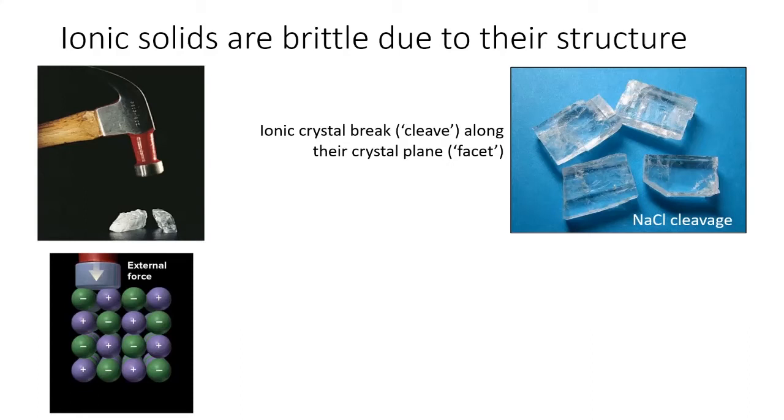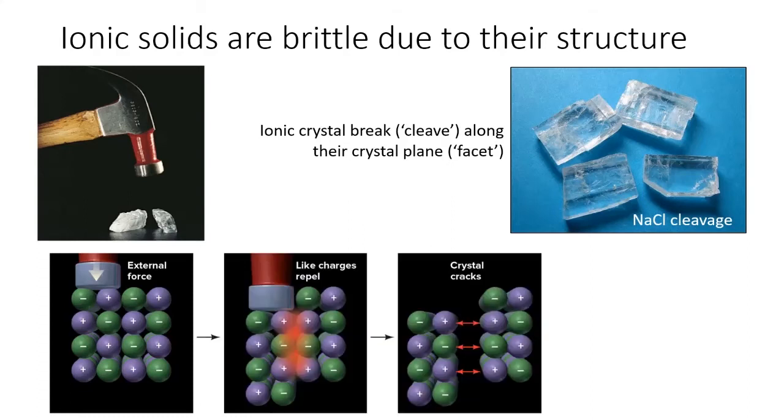However, if a strong external force pushes the ions out of alignment by less than even one nanometer, then each ion is suddenly next to ions of the same charge, their worst enemy. The like charges repel each other, and the crystal cracks, usually along a single plane. This plane is called a facet and leads to the geometric shape characteristic of many ionic crystals.